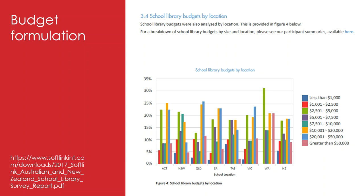Here is an example across the states of Australia. You can see that budgets vary from less than $1,000 up to and including greater than $50,000, depending upon the location of the school. Of course, school size and school type also make a difference to these budgets.